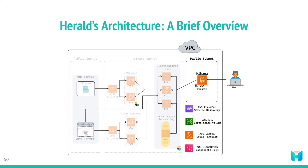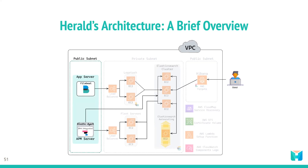On the right side of the diagram we have a public subnet where the Kibana application, which requires a public IP address, is deployed. Kibana receives queries from a user and sends requests to the Elasticsearch cluster. Other AWS resources that are part of Herald's architecture include: Cloud Map for service discovery, Elastic File System for centralized volume storage for containerized applications, CloudWatch for application logging, and a Lambda function which we will discuss later. On the left side of the diagram we have the user's application — Filebeat, which sends log data to Logstash, and APM Server, which sends traces and metrics data to Elasticsearch.